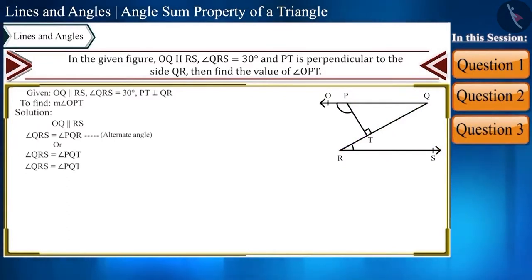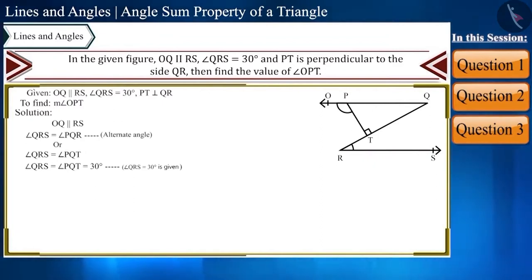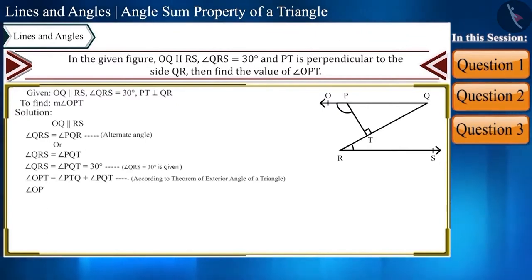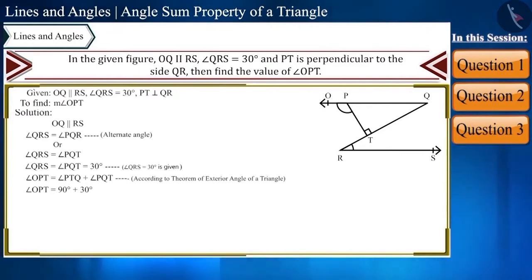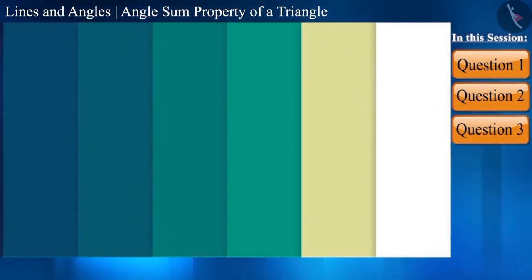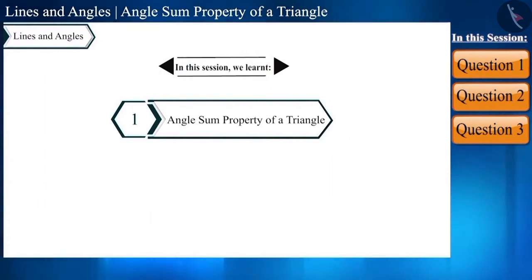Using the theorem of the exterior angle of a triangle, angle OPT equals angle PTQ plus angle PQT. Since PT is perpendicular to QR, angle PTQ equals 90 degrees. Substituting the values: angle OPT equals 90 plus 30 equals 120 degrees. So the final answer is angle OPT equals 120 degrees.